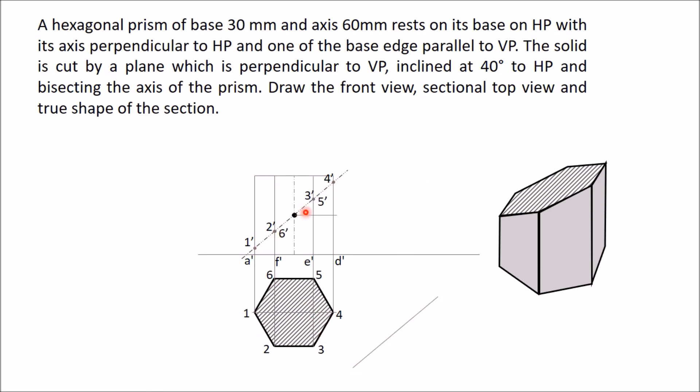And in this line only, you will get 1 and 4. So project 1 and 4 - that is, draw lines from 1 dash, 2 dash, 6 dash, 3 dash, 5 dash, and 4 dash. Draw lines perpendicular to this section line. So I have drawn a line from 1 dash - this point is 1. Similarly, draw all other lines. And 4 is coming in this line only. So you got 4 also.